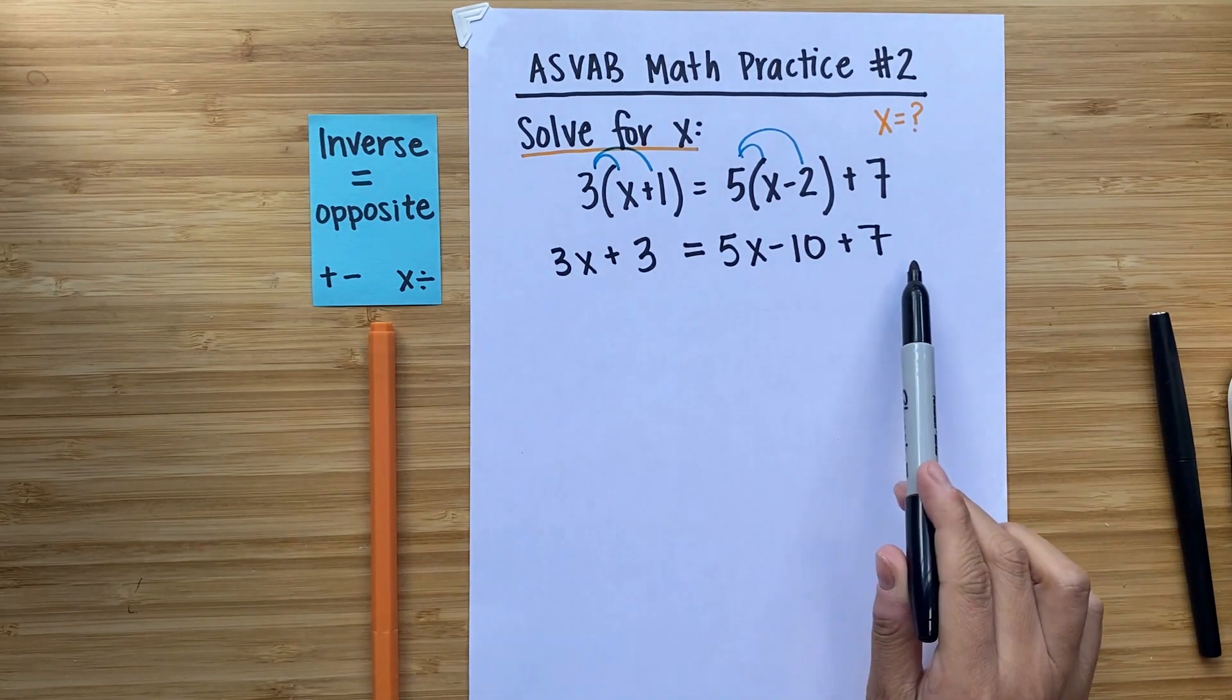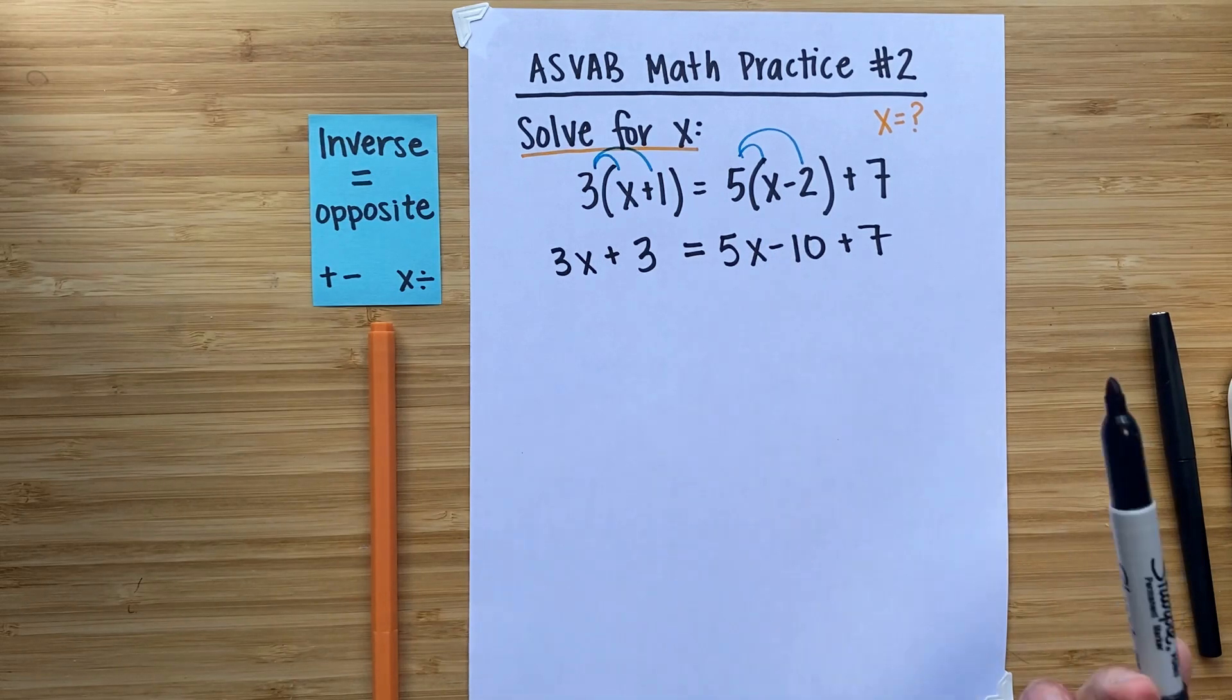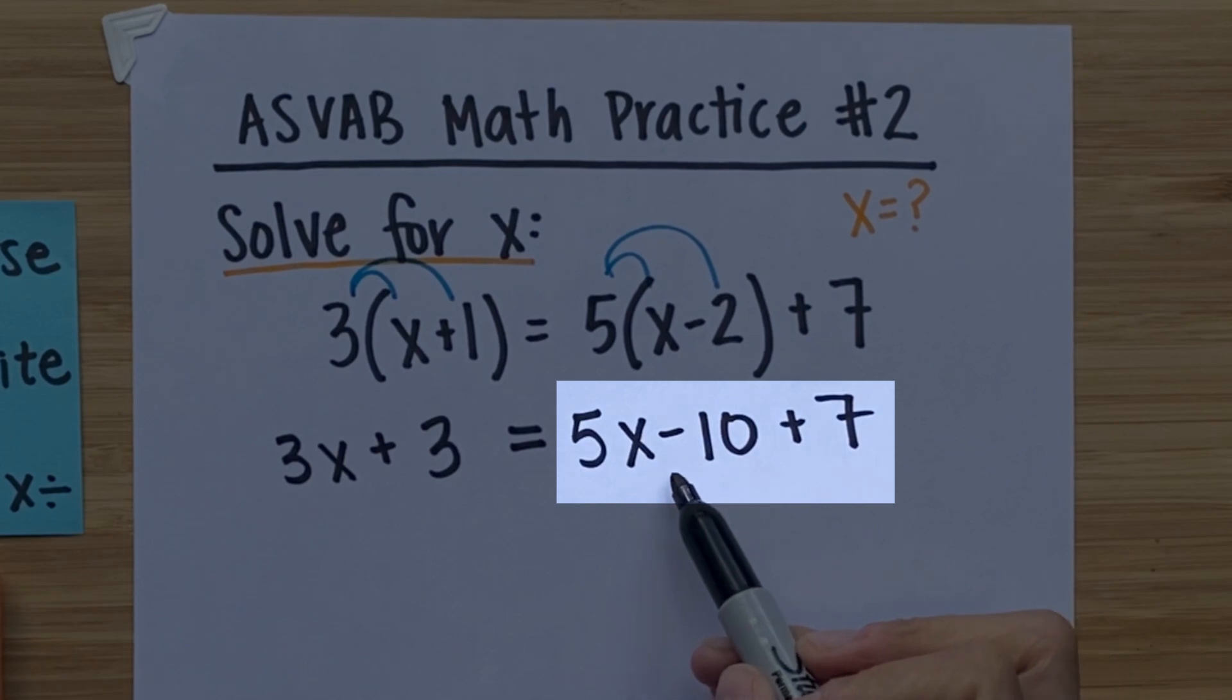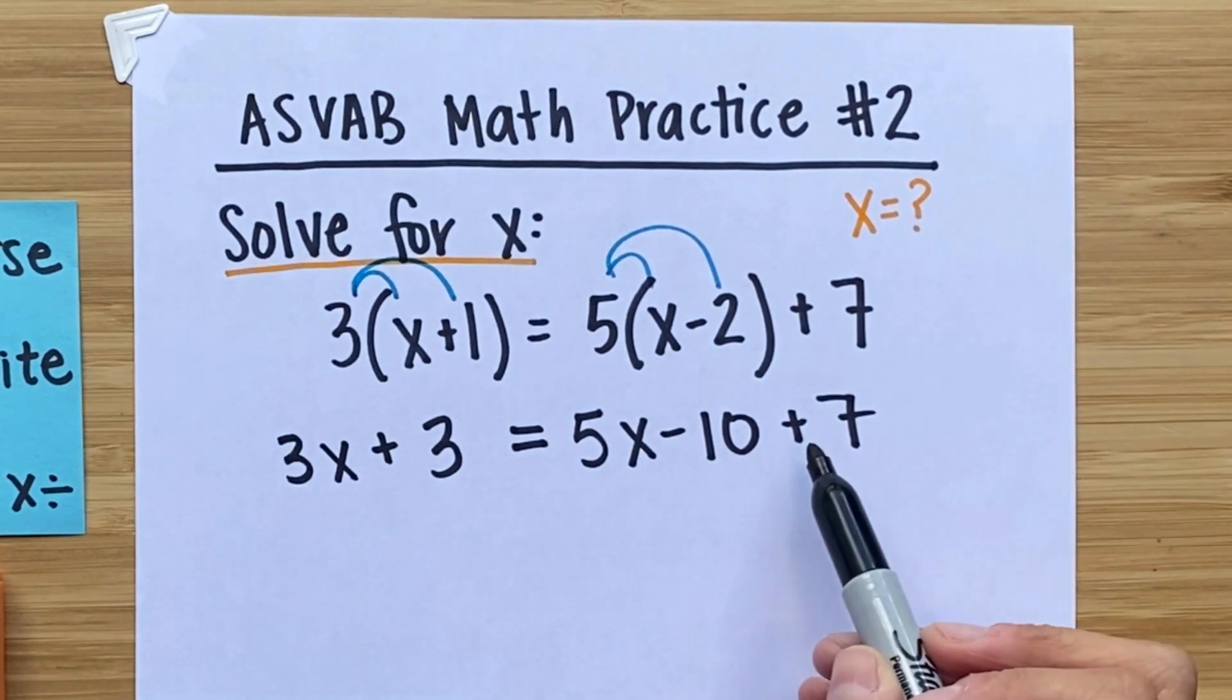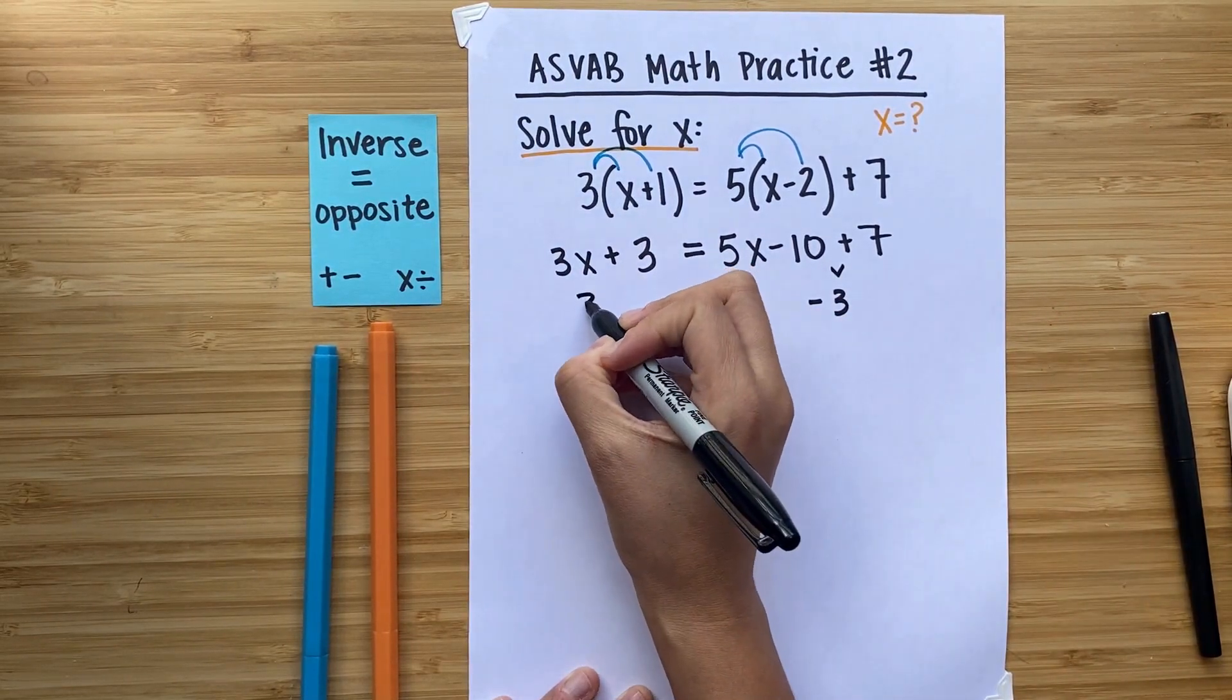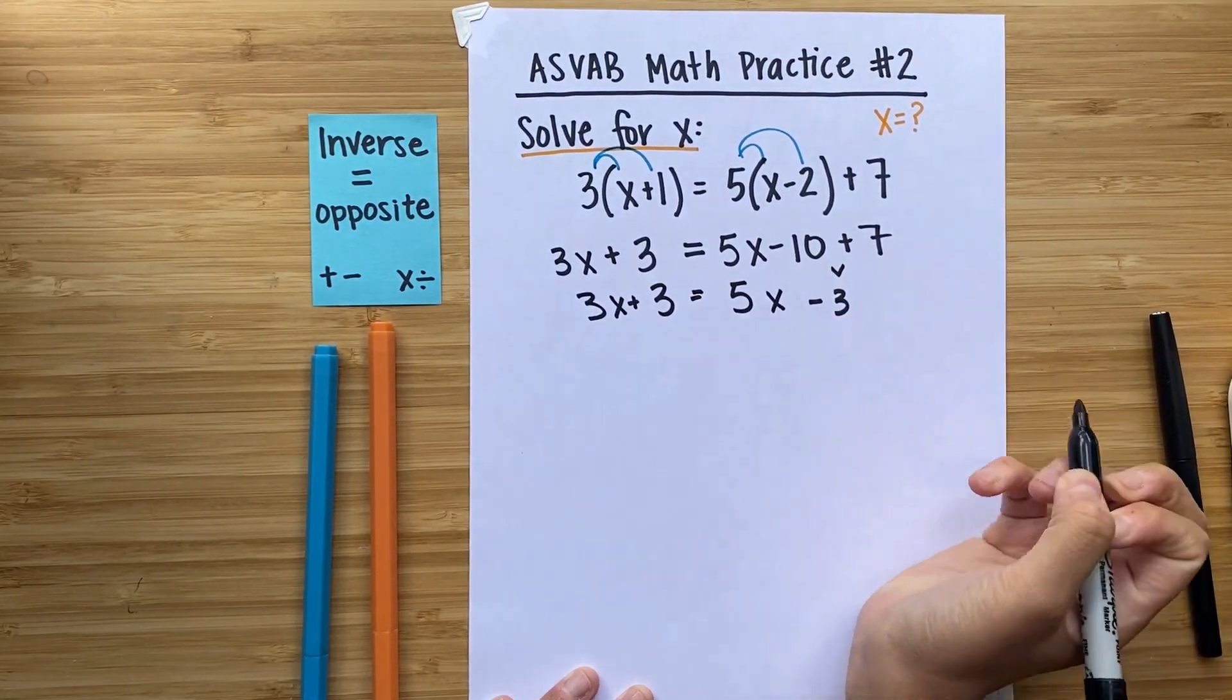So even though our equation is longer, we've actually simplified it because we were able to get rid of these parentheses here. The next thing I see when I take a look at this problem is that the left side of the equation, 3x plus 3, can't be simplified anymore. But on the right side, we have this negative 10 and this plus 7. These are both constants. Neither of them have a variable, so we can simplify. Negative 10 plus 7 is going to give us negative 3. And everything else just comes down. So we have 3x plus 3 is equal to 5x minus 3.